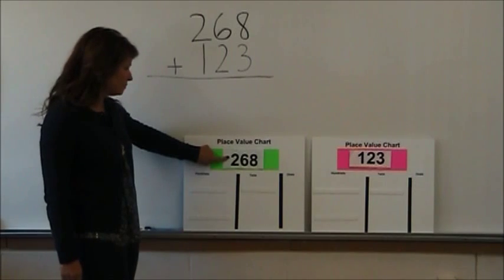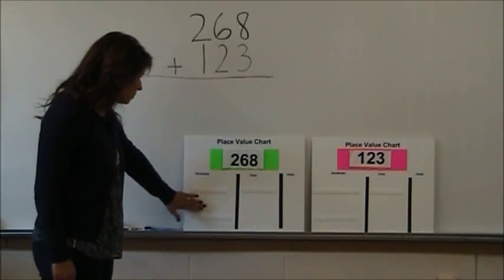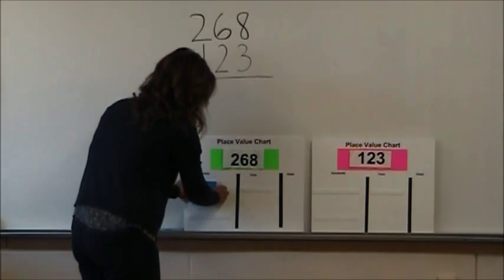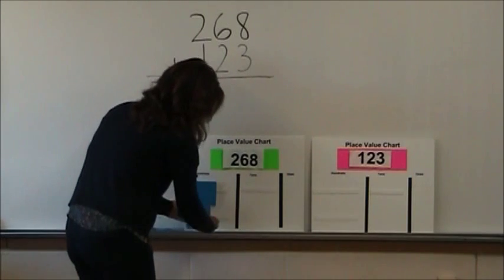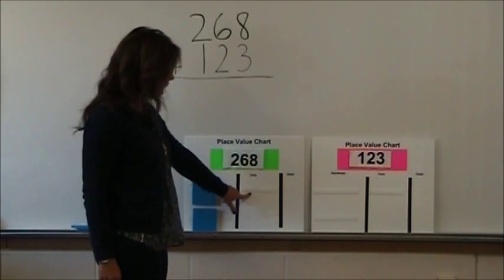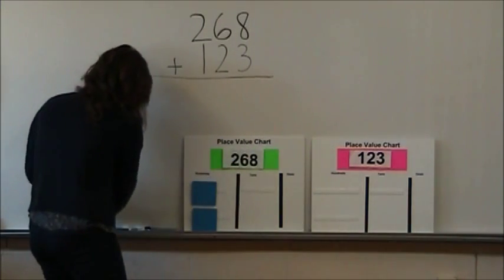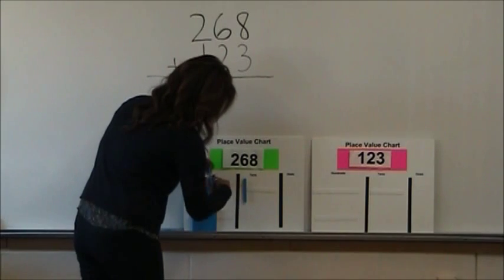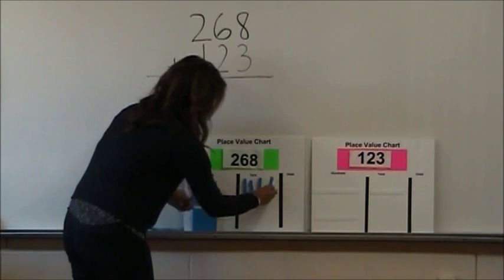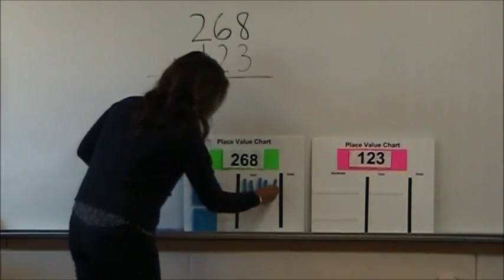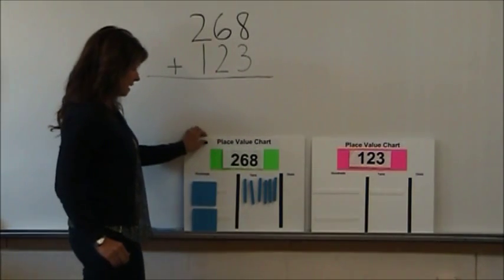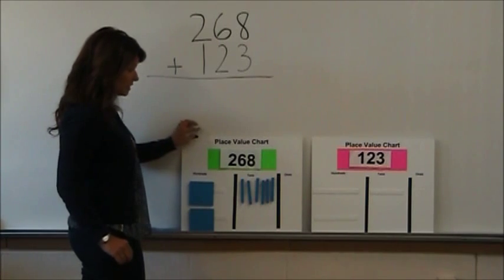Our first number here, 268. First we'll look at the hundreds column, we have 200, those can be represented in flats. The number six is our tens column, those can be represented in longs. And our ones column is an eight, the eight can be represented in cubes.